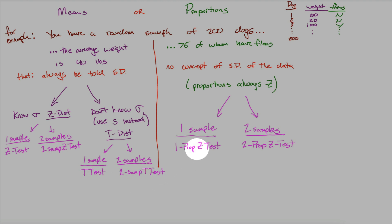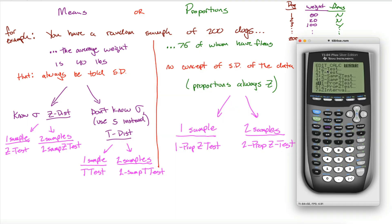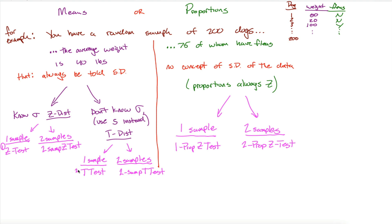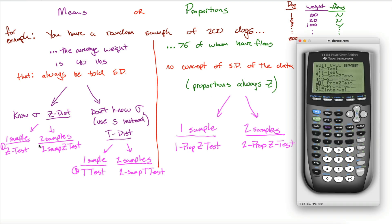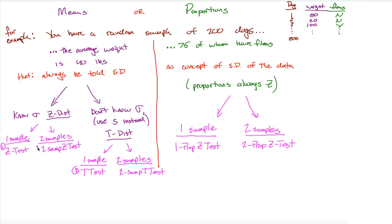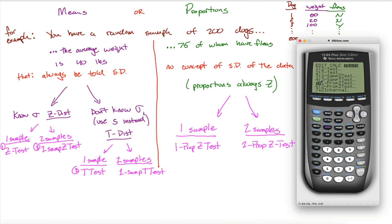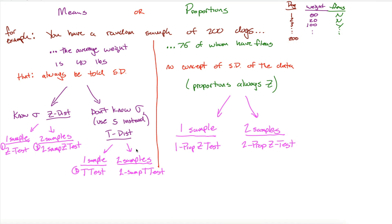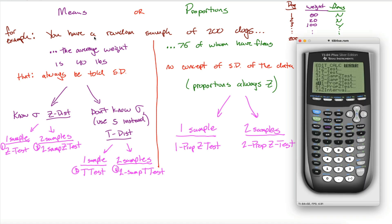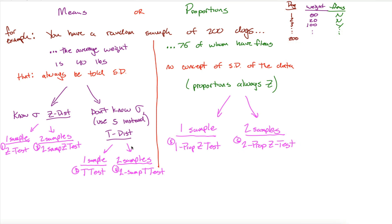That leaves us with five different options for hypothesis testing. On the calculator: z test is first, t test is second, two sample z test would be third but we won't see it in this class, two sample t test is fourth. Then for proportions, five and six are one prop z test and two prop z test respectively. That's a lot to keep track of, but there's good news.